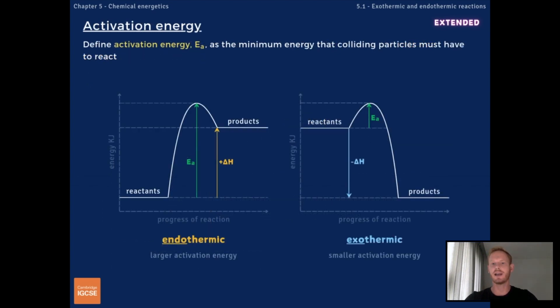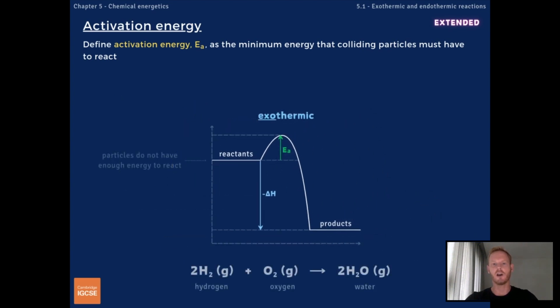Next, you need to define activation energy, with the symbol E subscript A, as the minimum energy that colliding particles must have in order to react. For example, if hydrogen is mixed with oxygen, the molecules collide, but no reaction takes place. This is because the energy that the molecules contain is less than the activation energy.